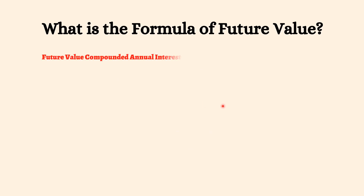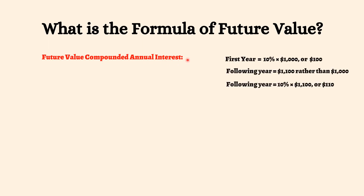In this case, the FV of the $1,000 initial investment is $1,000 into 1 plus 0.10 by 5, or $1,500. Future value using compounded annual interest: with simple interest, it is assumed that the interest rate is earned only on the initial investment. With compounded interest, the rate is applied to each period's cumulative account balance. In the example above, the first year of investment earns 10% into $1,000, or $100, in interest. The following year, the account total is $1,100 rather than $1,000, so the 10% interest rate is applied to the full balance for second year interest earnings of 10% into $1,100, or $110.